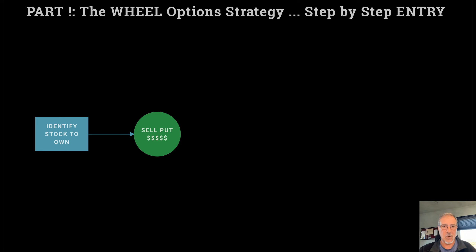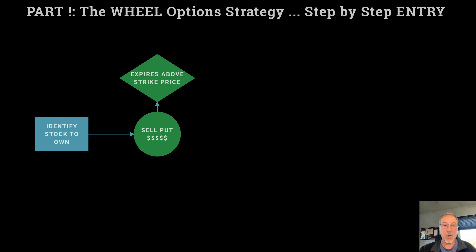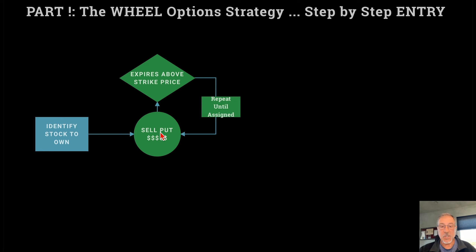Once I identify a stock I'd like to own, the next step — right now I own none of it but I want to — I go and start selling puts to get into that stock. So if the option expires above the put price, meaning it did not get put to me but I took in premium, I simply repeat the process. In some cases I could go through this cycle two, three, four, five, or six times or more before I ever even own the stock, just keep selling puts. And every time I do that, I am bringing in income into this account.